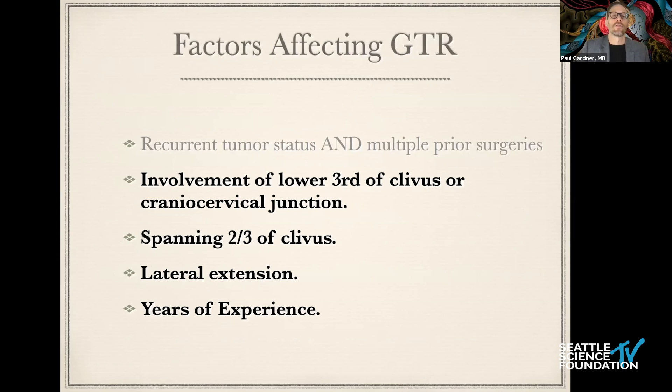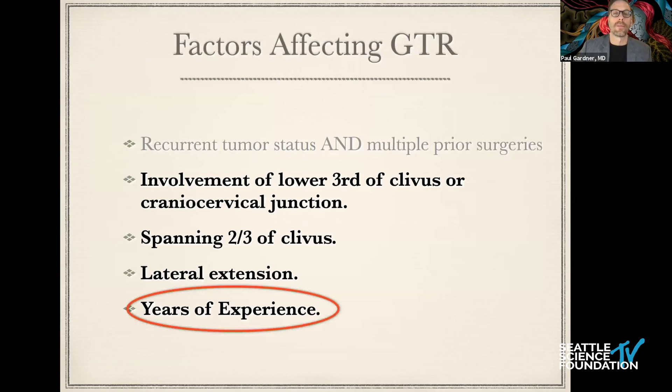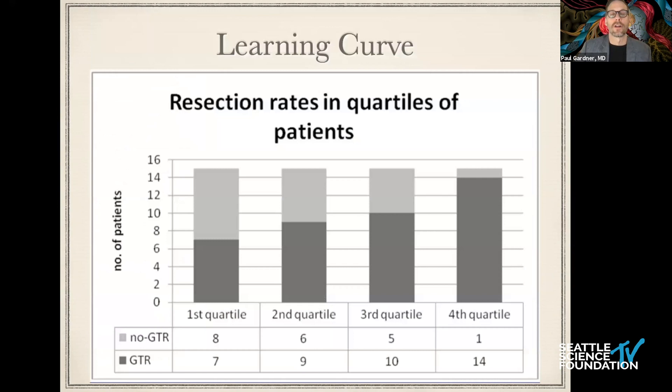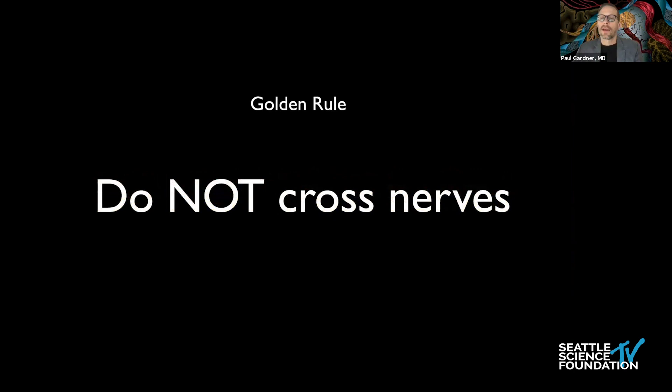We did get better at this over time. The factors affecting gross total resection were very large tumors, especially with lateral extension. But over time, years of experience made a difference in our ability to achieve gross total resection. We published our initial learning curve — while overall we only had about 60% gross total resection, we've now gotten to where about 90% of the time we're able to achieve that. The golden rule of not crossing nerves is critical.